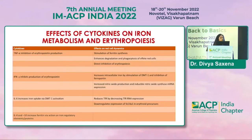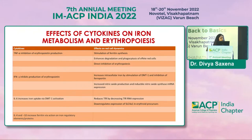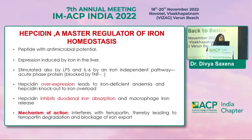The effects of cytokines on iron metabolism and erythropoiesis: TNF-alpha inhibits erythropoietin production, causes stimulation of ferritin synthesis in red blood cells, enhances degradation and phagocytosis of aged red cells, and directly inhibits erythropoiesis. IFN-gamma inhibits production of erythropoietin, increases intracellular iron by stimulation of DMT1 and inhibition of ferroportin, and increases nitric oxide production and inducible nitric oxide synthase mRNA expression. IL-6 increases iron uptake by DMT1 activation, reduces transferrin receptor by decreasing TFR RNA expression, and downregulates expression of SLC4A1 in erythropoietin precursors. IL-4 and IL-10 also increase ferritin by action on iron regulatory elements and proteins.